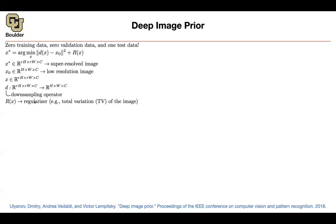One option — and this is what people were doing before deep learning — is to use total variation of your image, so that pixels are consistent and there is not a huge jump in color values from one pixel to the next. We usually use regularization techniques like dropout or early stopping to regularize a neural network. What is nice here is that you are going to use a neural network to regularize this minimization problem — a convolutional neural network as a regularizer. That's basically the idea.